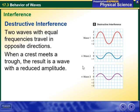Meanwhile, destructive interference: I have here my first wave and this is my second wave. You can see that those have opposite direction, so it's like a crest meeting a trough, which will reduce the amplitude. Two waves with equal frequencies travel in opposite directions. When a crest meets a trough, the result is a wave with a reduced amplitude.